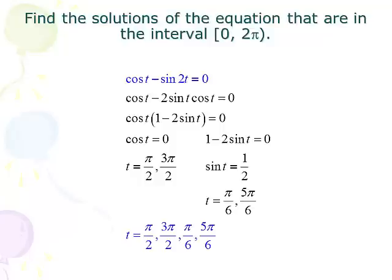We've done this a lot of times. When I do that I end up with cos t = 0 and 1 - 2 sin t = 0. And when is cosine zero? Well that's at π/2 and 3π/2. On the other side I have to subtract one divided by negative two so I have sin t = 1/2.